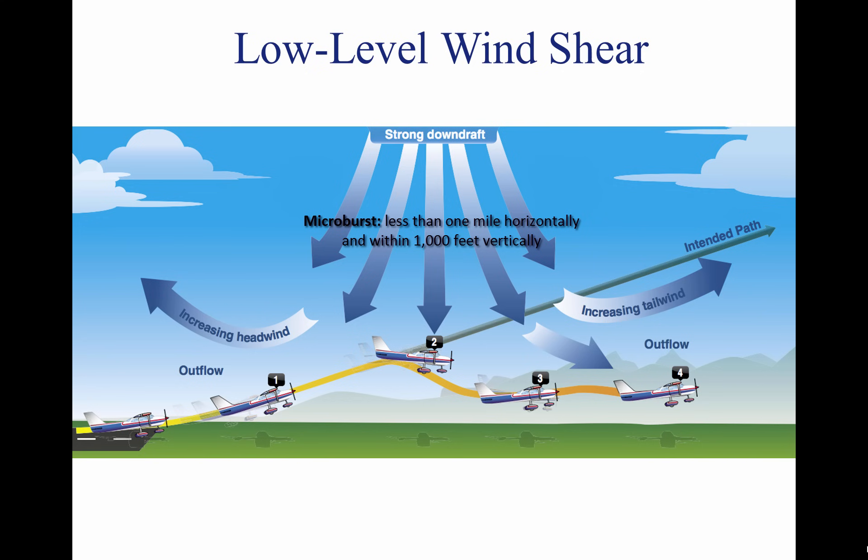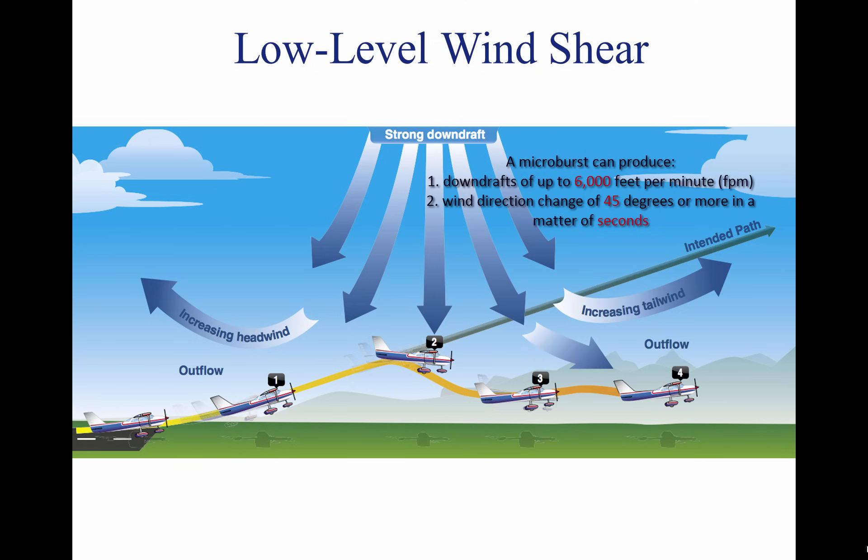A typical microburst occurs in a space of less than one mile horizontally and within 1,000 feet vertically. The lifespan of a microburst is about 15 minutes, during which it can produce downdrafts of up to 6,000 feet per minute.